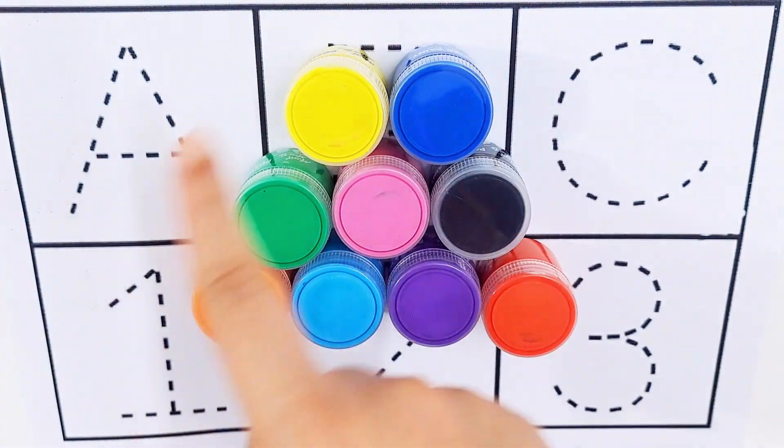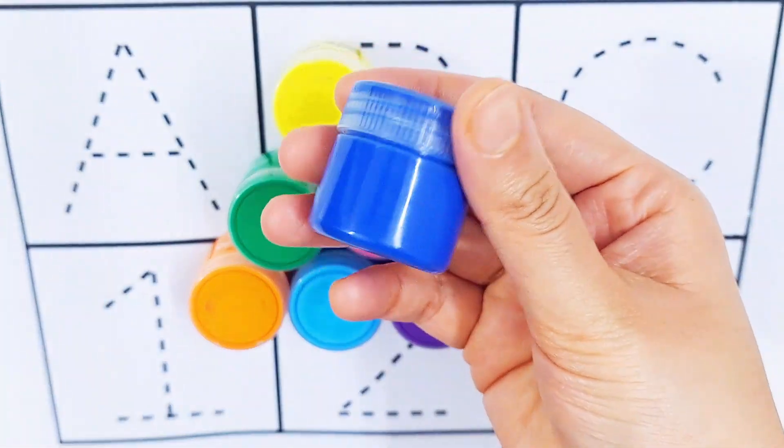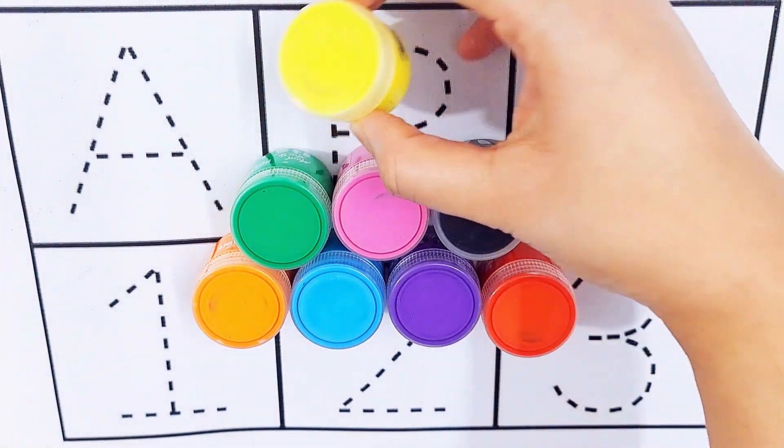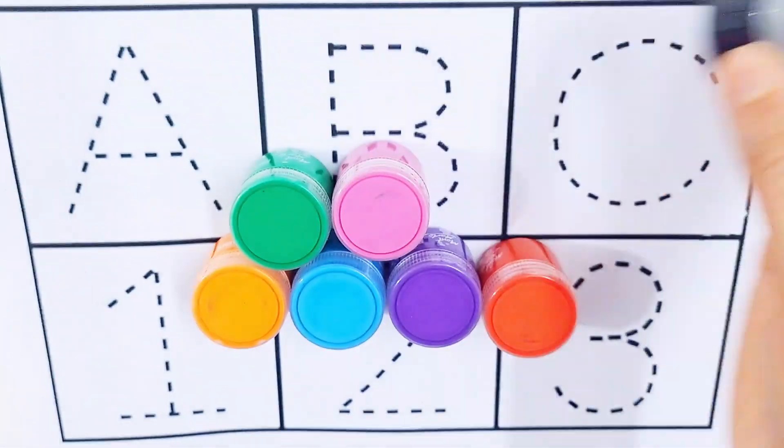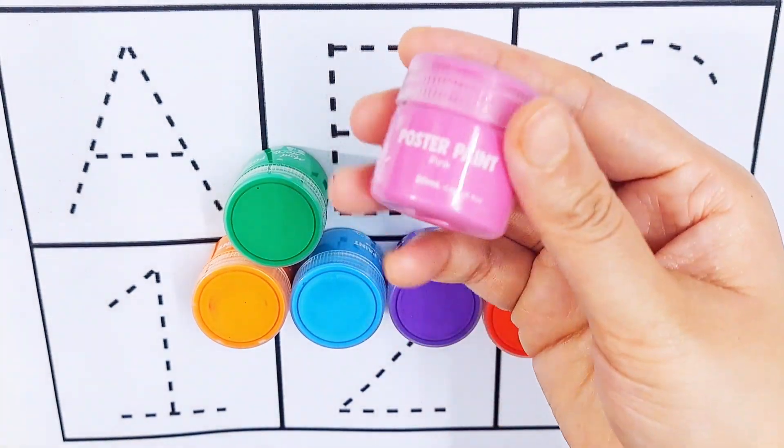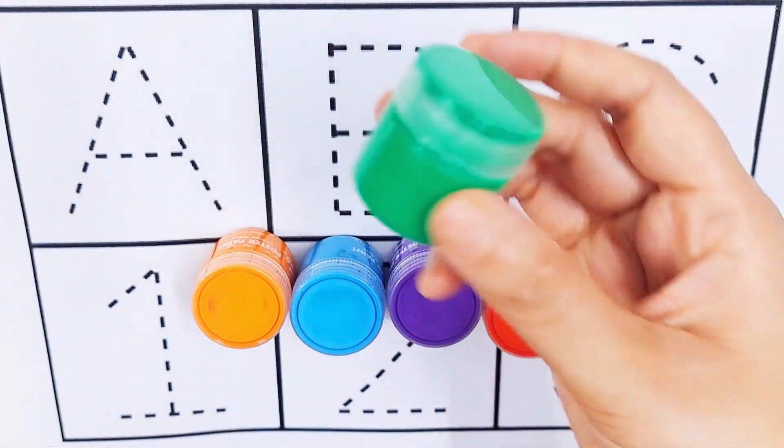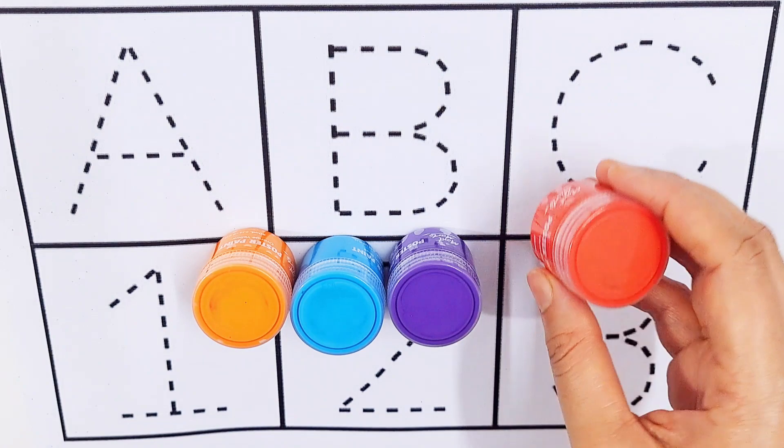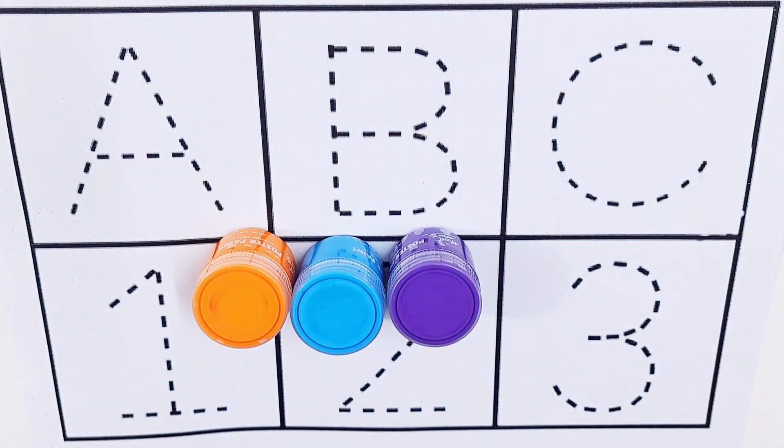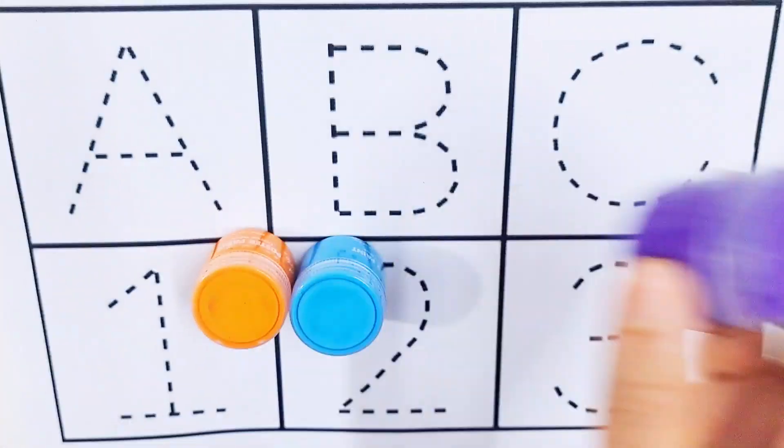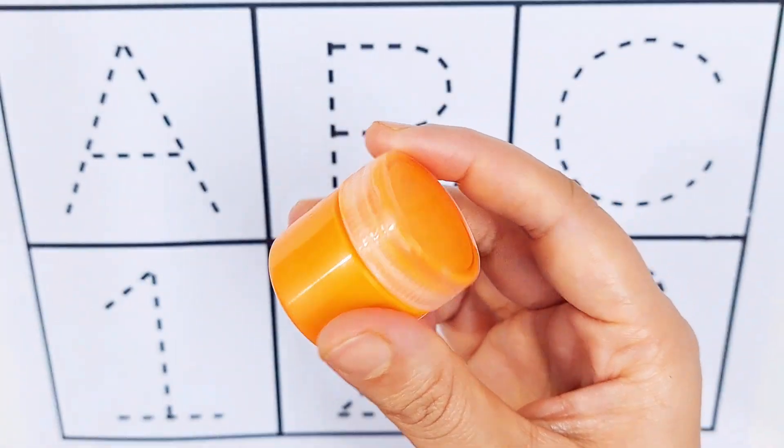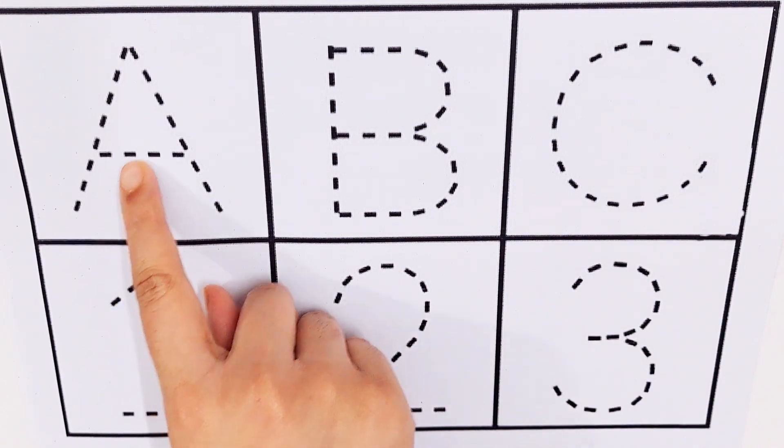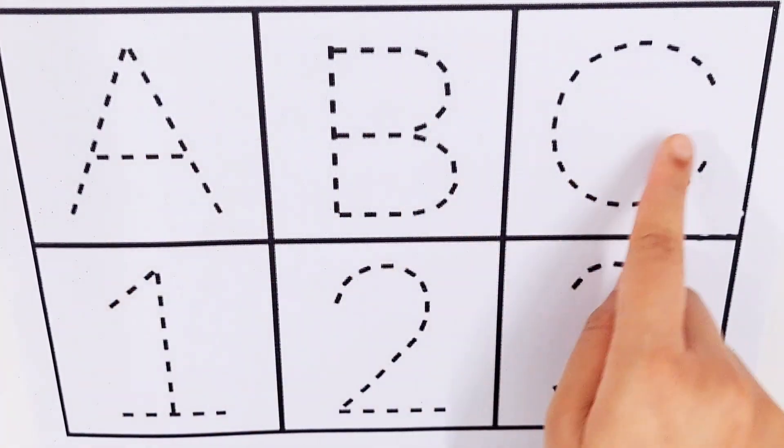Hello guys, let's learn some colors. Dark blue color, yellow color, black color, pink color, green color, red color, violet color, sky blue color, orange color. Today we're going to learn some alphabets and numbers.